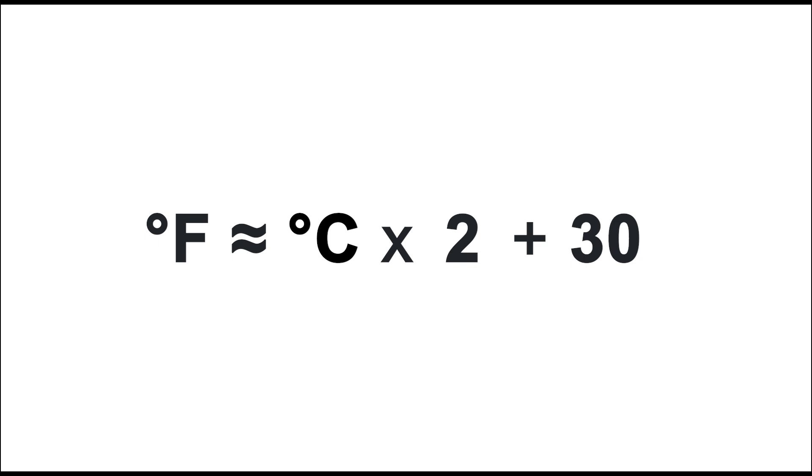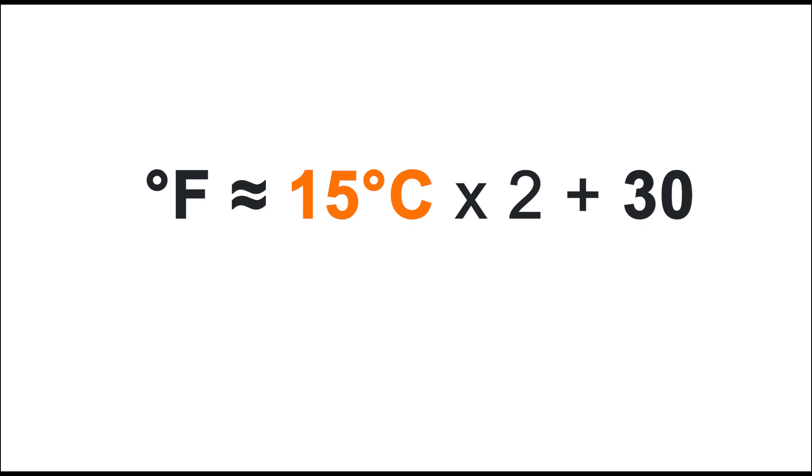For example, 15 degrees Celsius would be 15 times 2 plus 30, or around 60 degrees Fahrenheit. For Celsius between 2 degrees and 32 degrees, this will get you a Fahrenheit value within 5% of the actual.